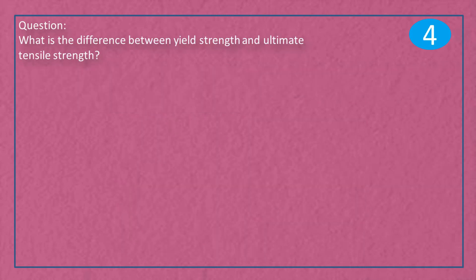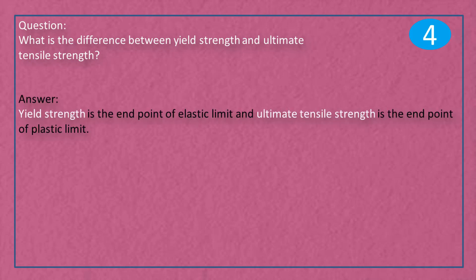Question: What is the difference between yield strength and ultimate tensile strength? Answer: Yield strength is the end point of elastic limit and ultimate tensile strength is the end point of plastic limit.